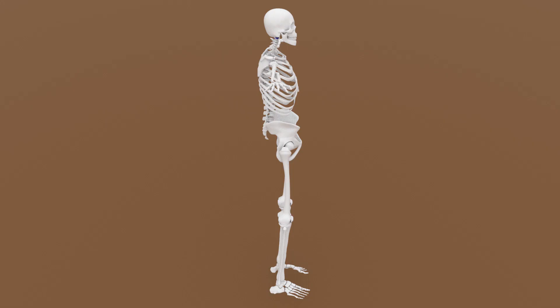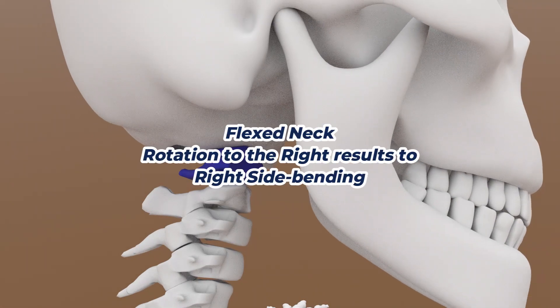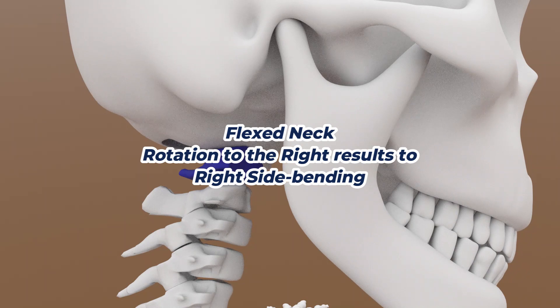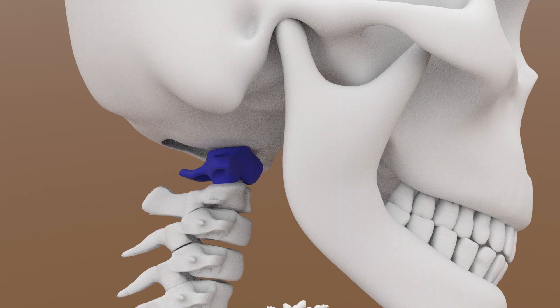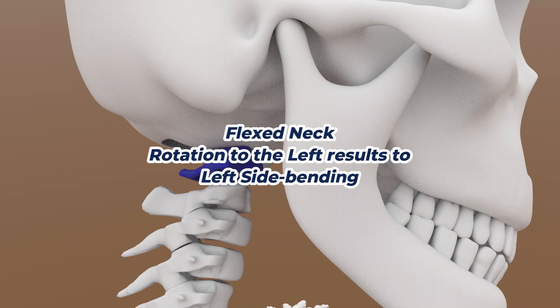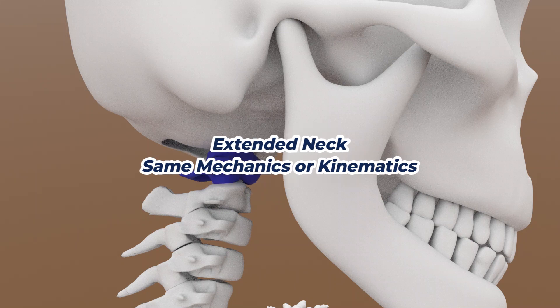However, if the neck is flexed, then rotation to the right will be coupled with same-side bending to the right. In contrast, rotation to the left will be coupled with same-side bending to the left. This same mechanics is also applicable during neck extension.